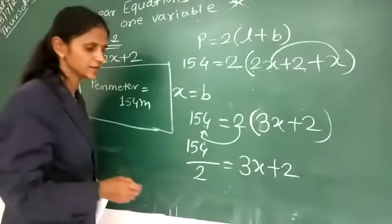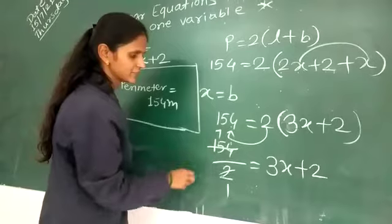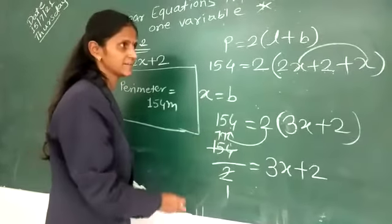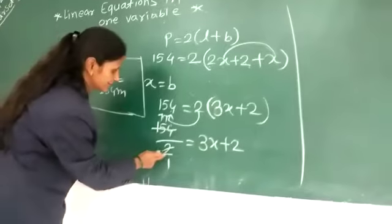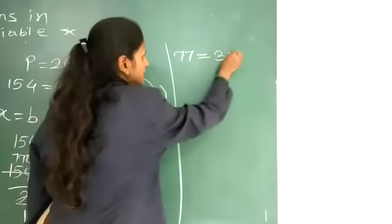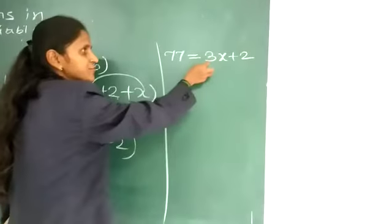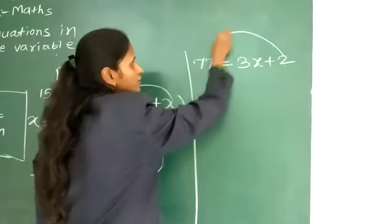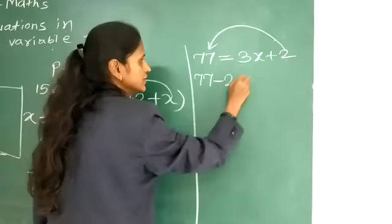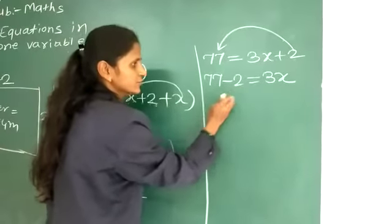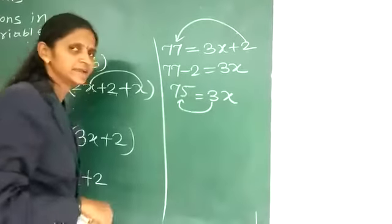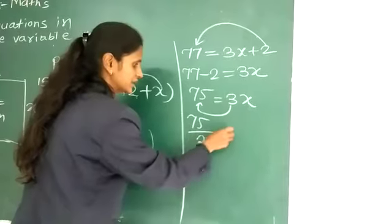So 154 divided by 2 gives us 77. So we write: 77 equals 3x plus 2. Now that 2 is on the right side, so we take it to the left: plus becomes minus. So 77 minus 2 equals 3x. 77 minus 2 is 75, so 75 equals 3x. Now that 3 multiplies x, so if it moves it will divide: 75 divided by 3 equals x. 75 divided by 3 gives us 25. So x is equal to 25.